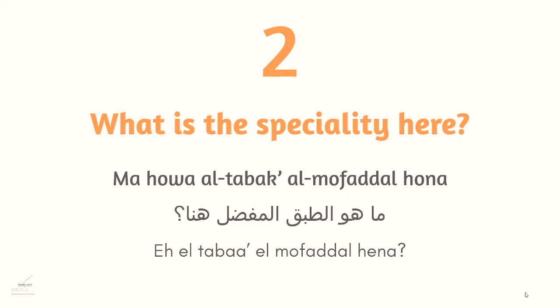Phrase two: ما هو الطبق المفضل هنا — 'what is the speciality here?' الطبق is the dish or speciality. In Egyptian Arabic we say ايه instead of ما هو, so it becomes: ايه الطبق المفضل هنا.